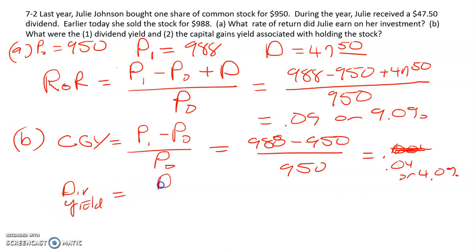Dividend yield is simply dividend divided by the beginning price. So that's our $47.50 divided by $950, so that's 0.05 or 5%. And we proved it to ourselves. So 5% dividend yield plus 4% capital gains yield is equal to the 9% holding period yield or rate of return. All of those refer to the same thing.